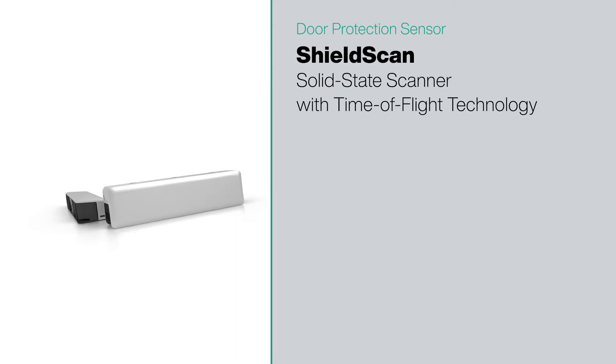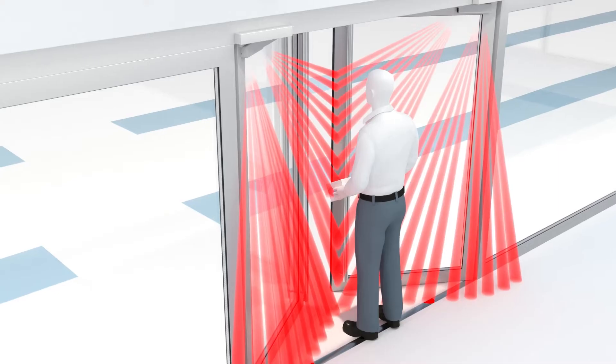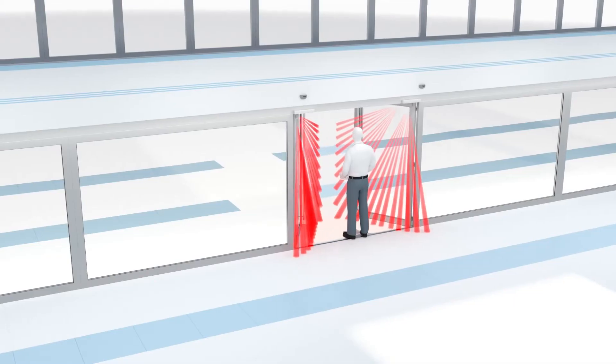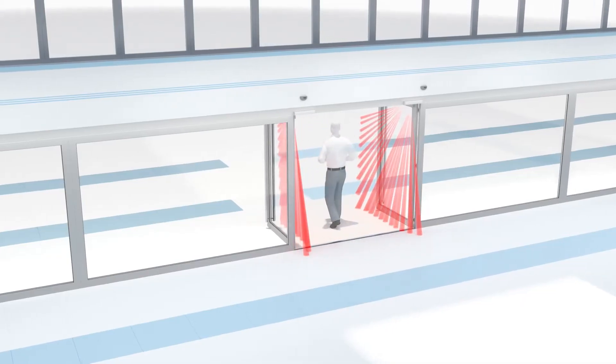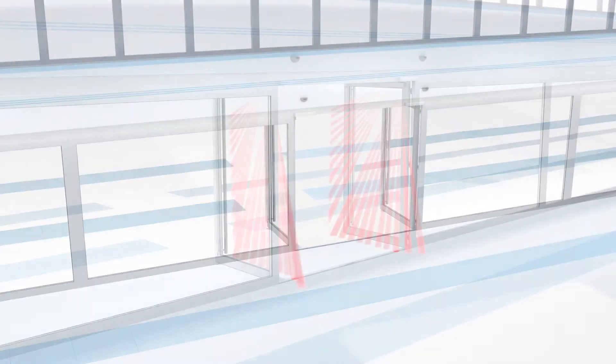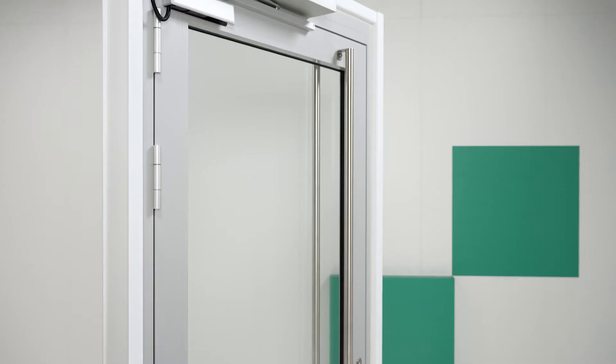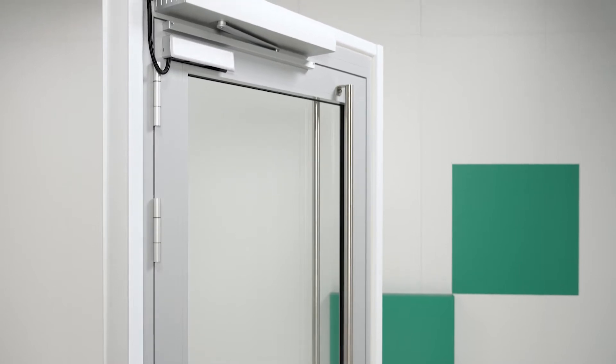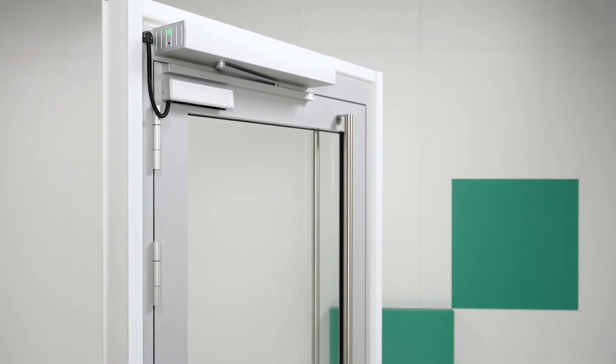The Papel & Fuchs Shield Scan is a presence sensor designed specifically for automatic revolving doors. This solid-state scanner is equipped with time-of-flight technology and has no moving components, ensuring reliable and silent operation in any ambient conditions. This video will show you how to quickly and easily install and commission the sensor.